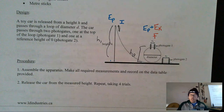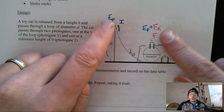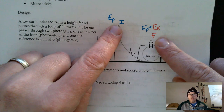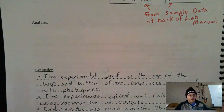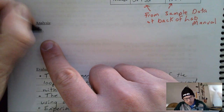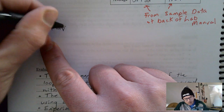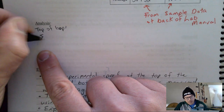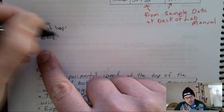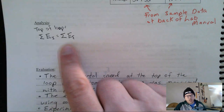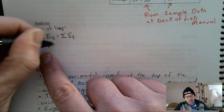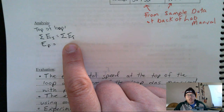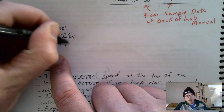When I do conservation of energy calculations, I set the initial and final energy equal to each other. For the top of the loop: the sum of initial energy equals the sum of final energy. My initial energy was all gravitational potential energy, EP. In the final situation at the top of the loop, there were two types of energy: EP and EK.